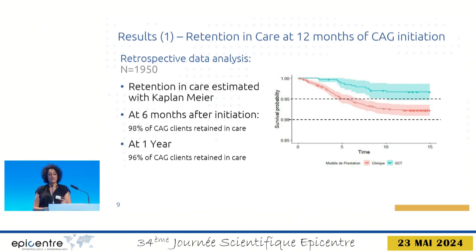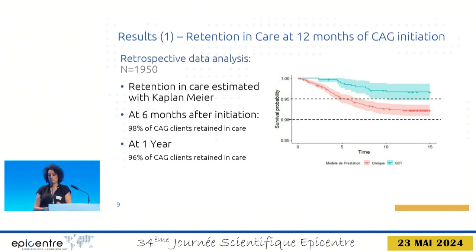One concern was that leaving patients free to choose might lead to loss to follow-up. We analyzed close to 2,000 people in the cohort using a Kaplan-Meier analysis, a frequently used statistical tool, and documented retention at six months and one year for CAG clients. 96% of patients in CAG were retained in care.